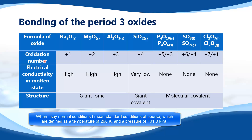Next we have the oxidation number. For sodium it's +1. Magnesium +2. Aluminium +3. Silicon +4. In P₄O₁₀ the phosphorus is +5. In P₄O₆ the phosphorus is +3.